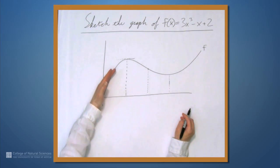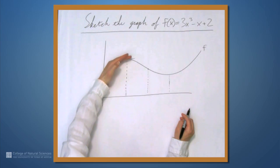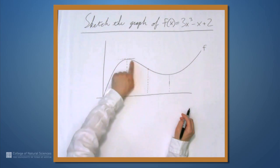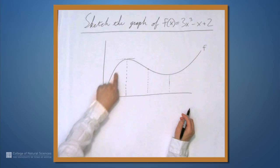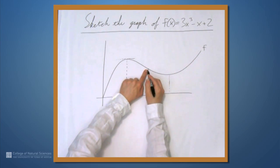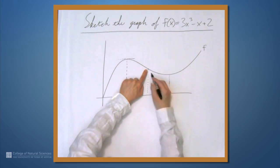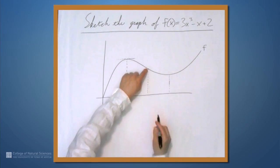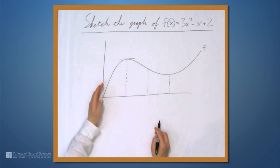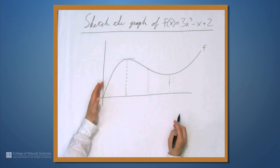The graph curves downward up until this point — we call this concave down. After this point it opens upward, and we call this concave up. This is called an inflection point, and this is also going to be important. This is determined by f'', the second derivative.